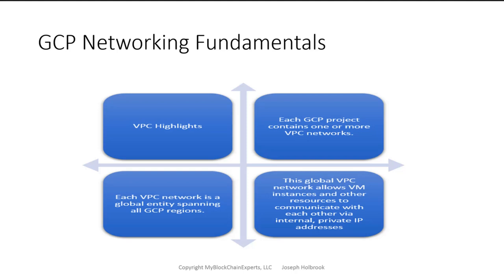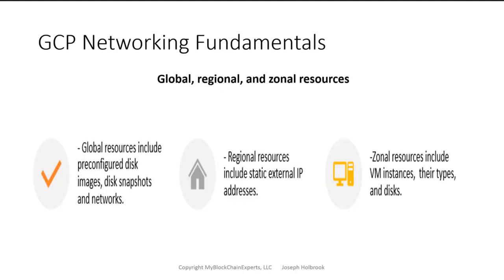This VPC network allows your VMs to communicate with other resources on the Google Cloud backend network. When we create our first project, we'll of course have this VPC created, and we could also choose auto mode or custom mode. We're going to need to deploy our resources as quickly and efficiently as possible. The network will have our subnets, routes, and firewall rules — we'll talk about all that in the demo in more detail. Also note that resources could be global, regional, or zonal — just because you have a regional resource in a VPC does not make it a global resource. Subnets are actually regional resources.